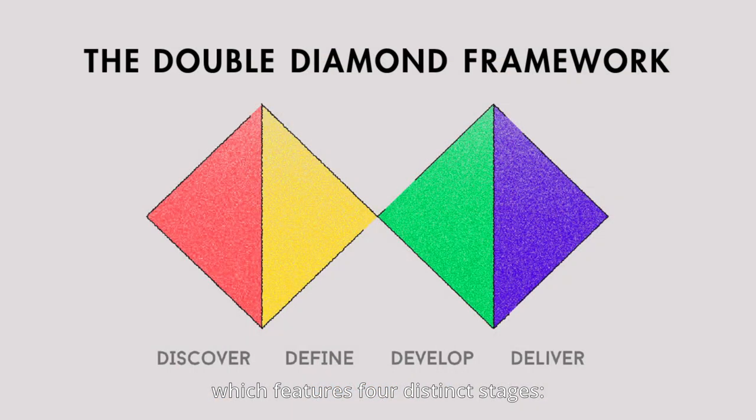Our friends at the Hong Kong Design Center follow the double diamond model as proposed by the UK Design Council, which features four distinct stages: Discover, Define, Develop, and Deliver.